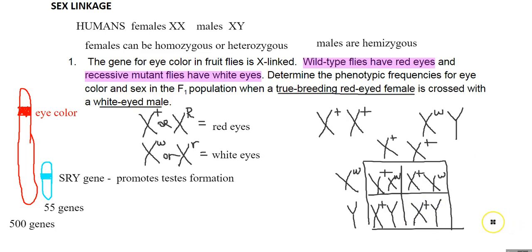The males are hemizygous — they only have one allele for eye color — but they also display red eyes. So 100% of offspring have red eyes. All females have red eyes and all males have red eyes. Looking at sex and eye color together: 50% of offspring will be females with red eyes and 50% will be males with red eyes.